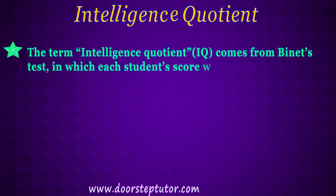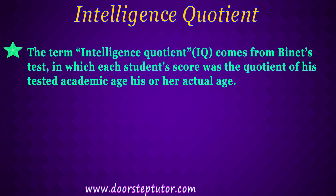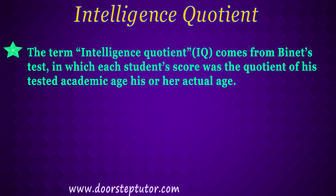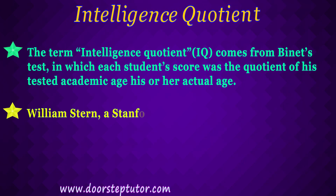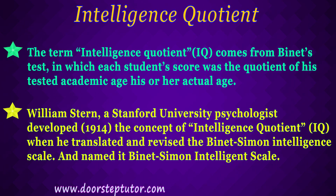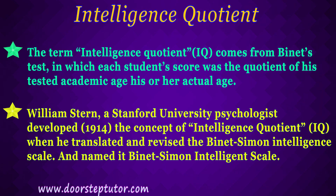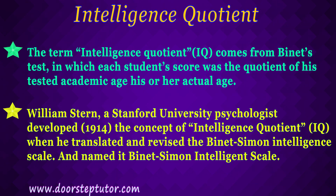The term intelligence quotient or IQ comes from the Binet test, in which each individual's score was the quotient of his or her tested academic age with his or her actual age. William Stern, a Stanford University psychologist, developed in 1914 the concept of intelligence quotient when he translated and revised the Binet-Simon intelligence scale.